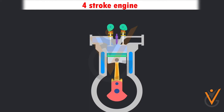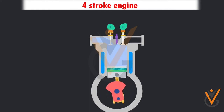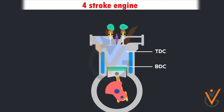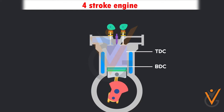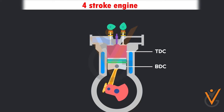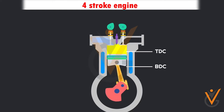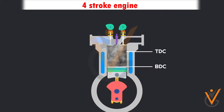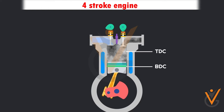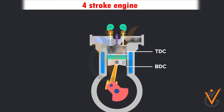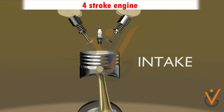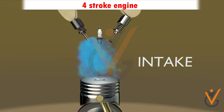The events taking place in an IC engine are as follows. Suction stroke: the downward movement of the piston draws fresh air inside the chamber. Compression stroke: the upward movement of the piston compresses the air-fuel mixture. Power stroke: an explosion takes place and the piston is pushed downward. Exhaust stroke: an upward movement of the piston draws out used gases. These four events are completed in four strokes of the piston and two revolutions of the crankshaft.